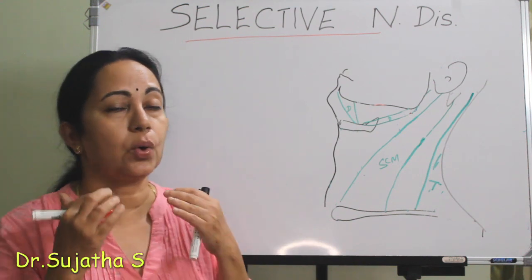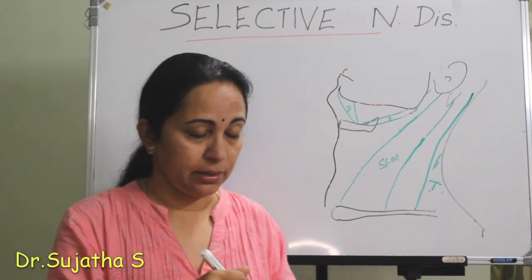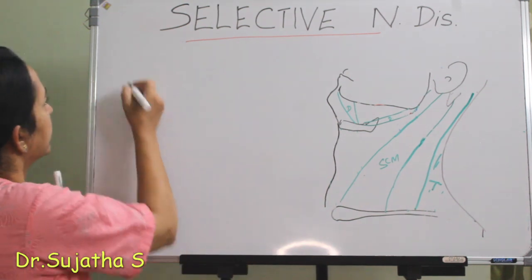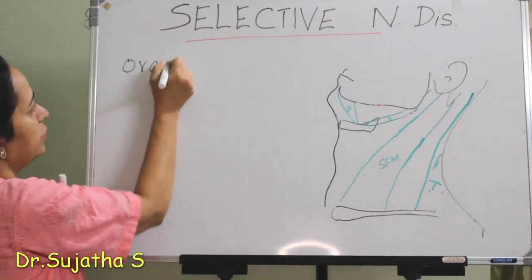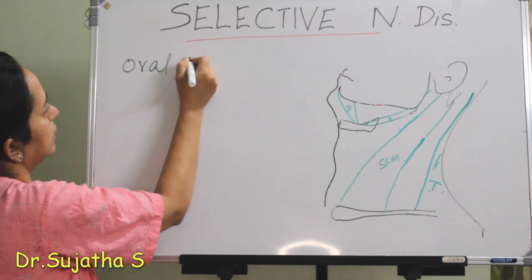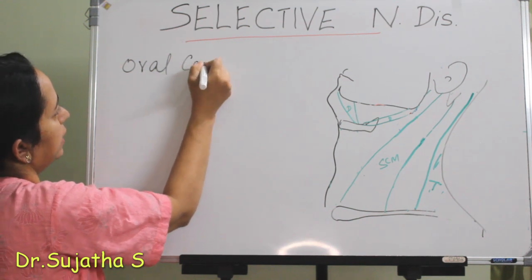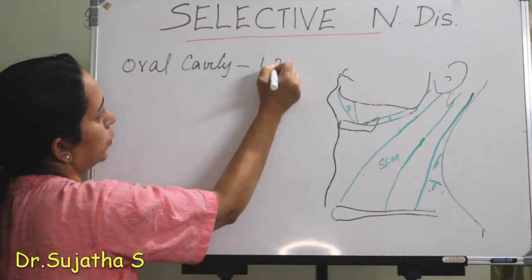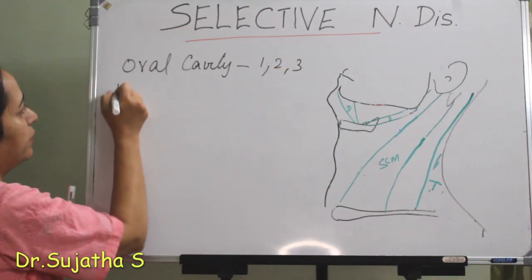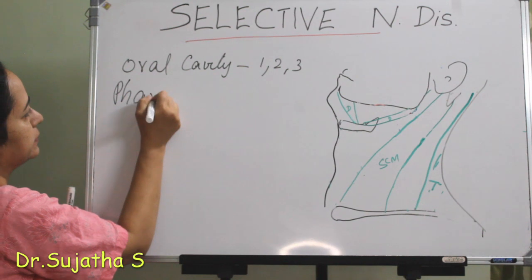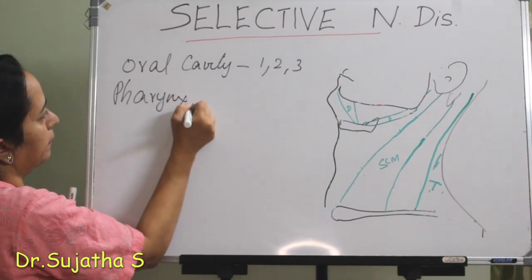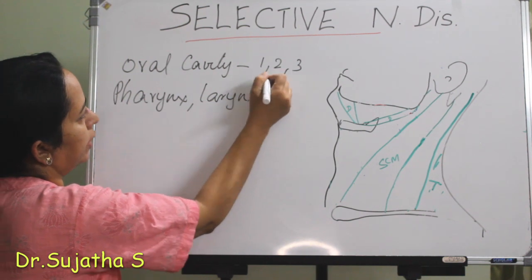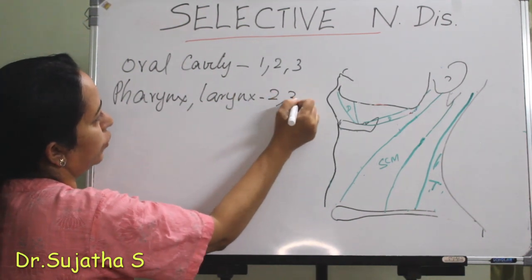Generally, from the oral cavity, the lymph nodes involved are levels 1, 2, and 3. From the oral cavity and oropharynx, the nodes involved are usually levels 1, 2, and 3. From the pharynx and larynx, the nodes involved are levels 2, 3, and 4.